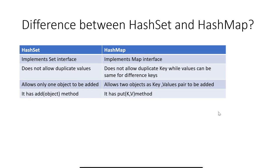What is the difference between HashSet and HashMap? HashSet implements the Set interface while HashMap implements the Map interface. HashSet does not allow duplicate values, while HashMap does not allow duplicate keys but two unique keys can have the same value. HashSet allows only one object to be added, while in HashMap we add two objects as a key-value pair. HashSet has an add method while HashMap has a put key-value method to add any object.